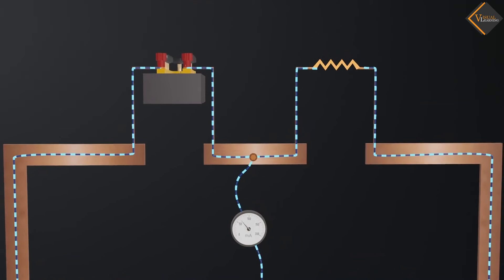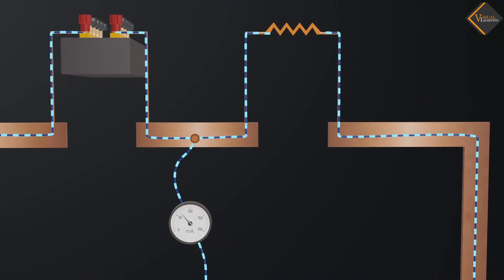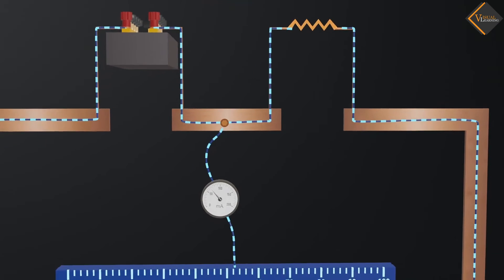After the current divides, it passes through the resistance box and then again divides between the galvanometer and the unknown resistance.